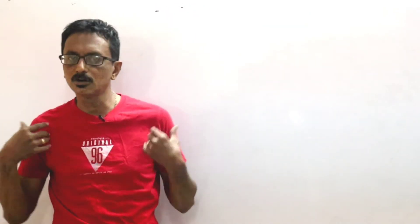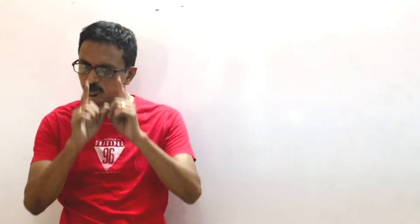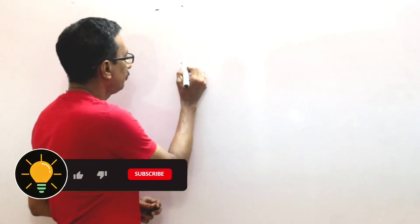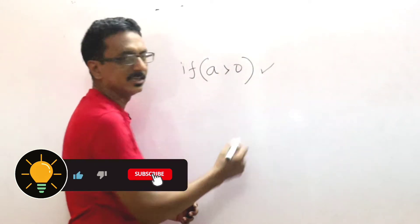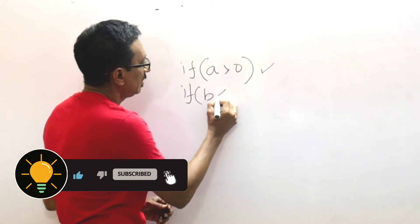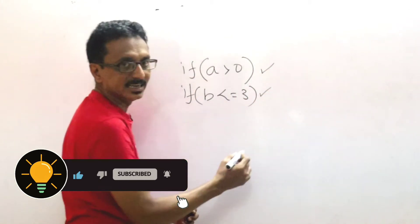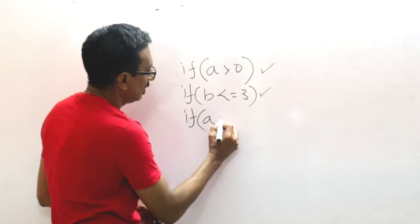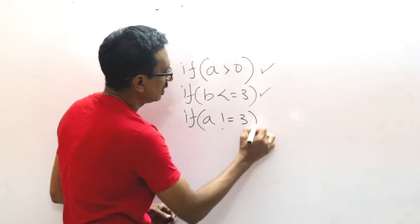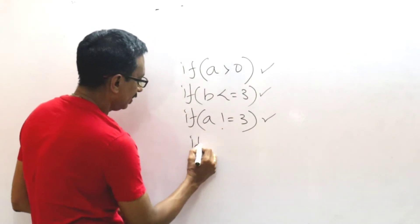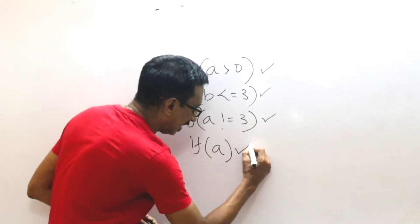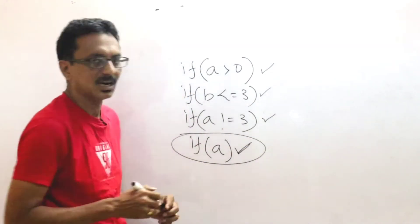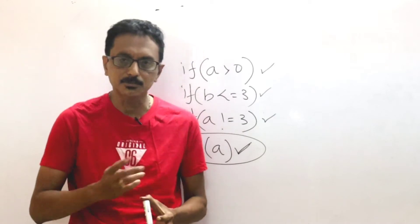If you come to this program, there is an interview question. You will find a conditional statement. A greater than 0 is valid. If b less than or equal to 3 is valid. If a not equal to 3 is valid, you will find a conditional statement.